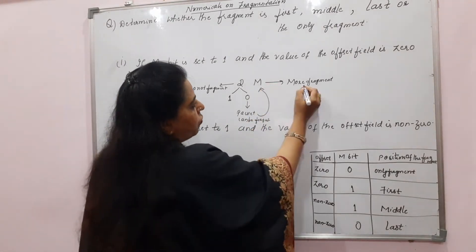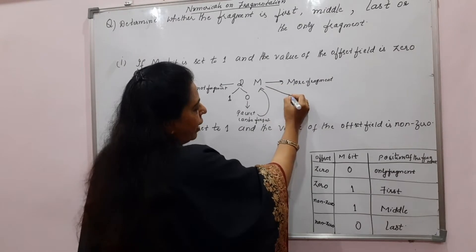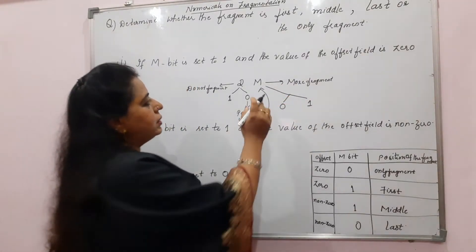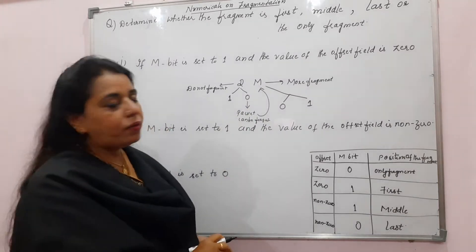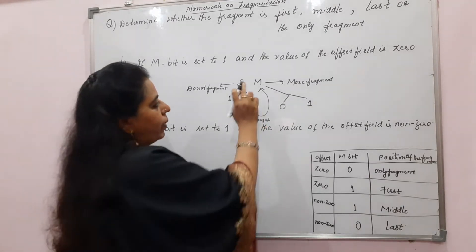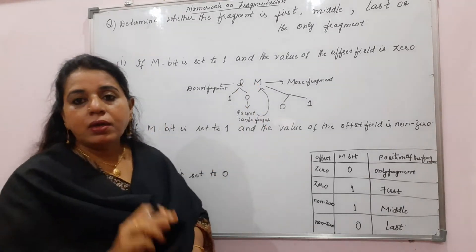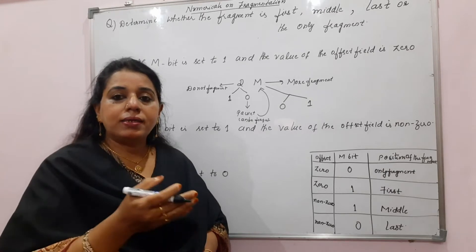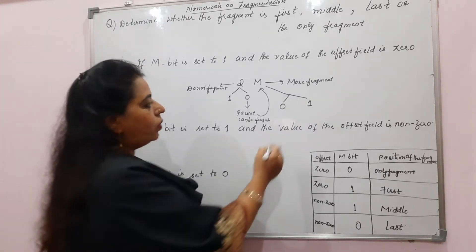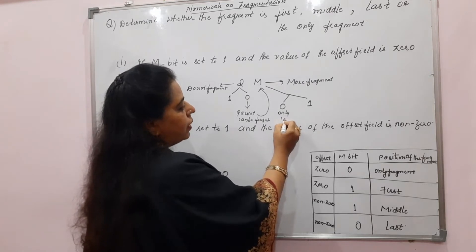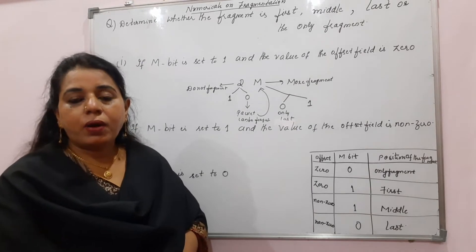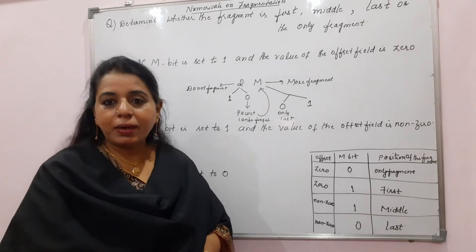The M — more fragment — bit will have two values: 0 and 1. A value of 0 for the M bit indicates that it is the only fragment or it is the last fragment. Whereas if the value of the M bit is set to 1, it indicates that it can be the first fragment or the middle fragment.